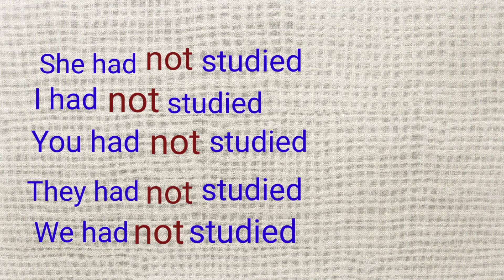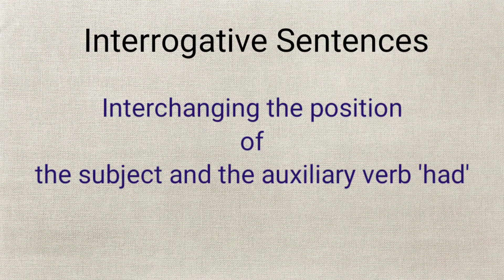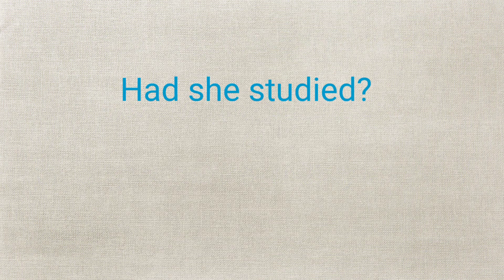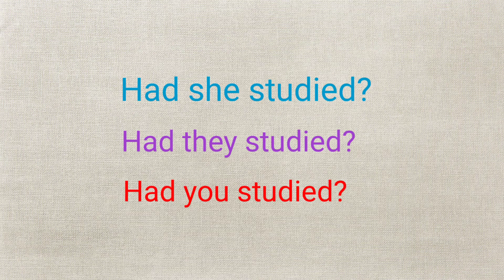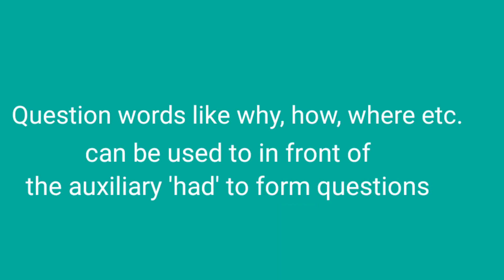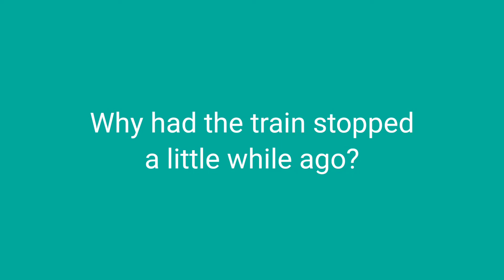Now let's find out how interrogative sentences are formed. They can be formed by interchanging the places of the subject and the auxiliary verb 'had'. For example: Had she studied? Had they studied? Had you studied? And so on. Sometimes you can also use question words like why, where, how, etc., in front of the auxiliary 'had' to form questions. For example: Why had the train stopped a little while ago?